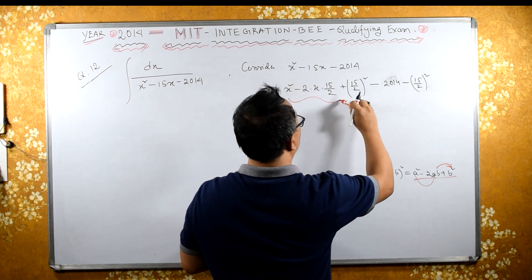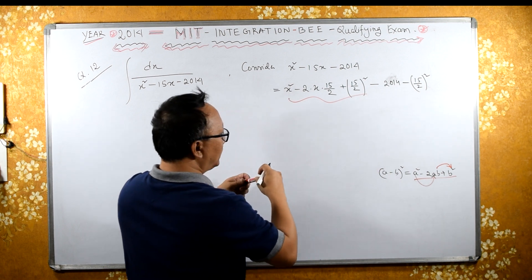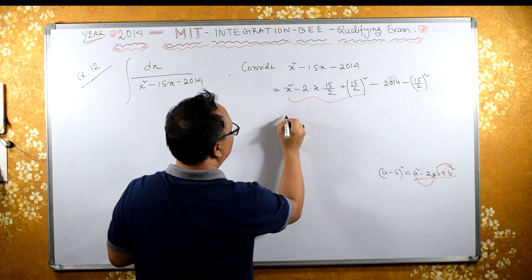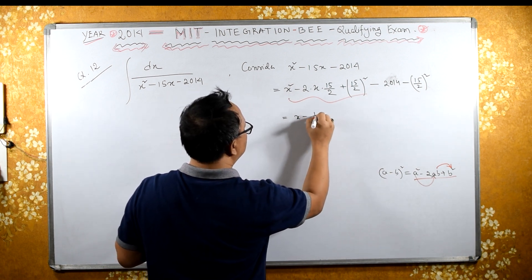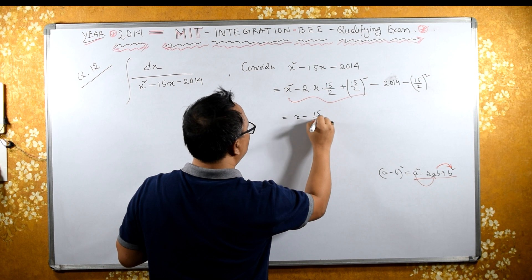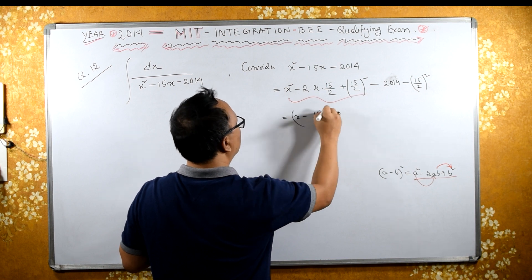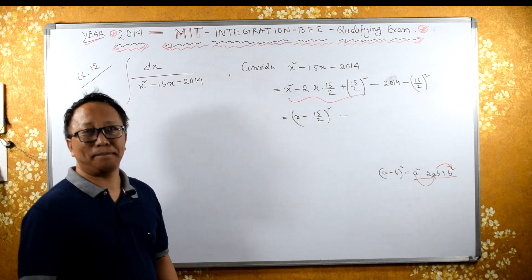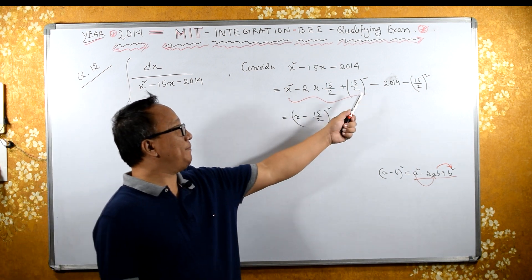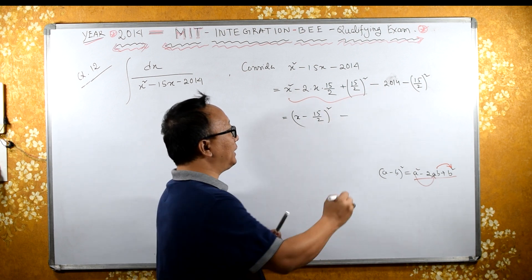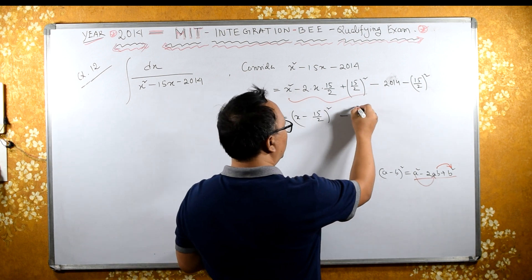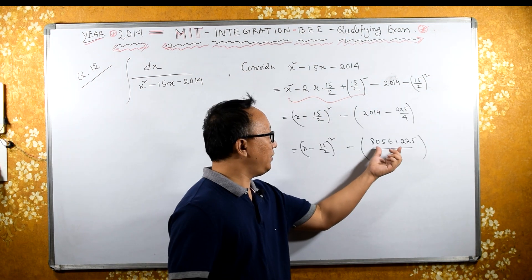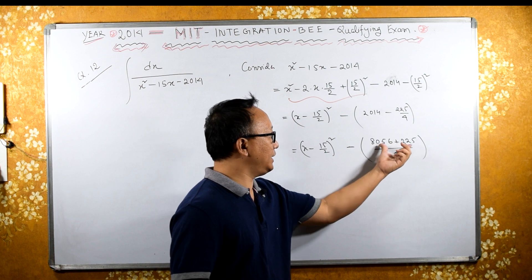The whole expression becomes what? It is of the form A minus B. Therefore this is x minus 15 by 2 whole square, minus. Taking minus over here, I will get 2014. Now let's add these two.